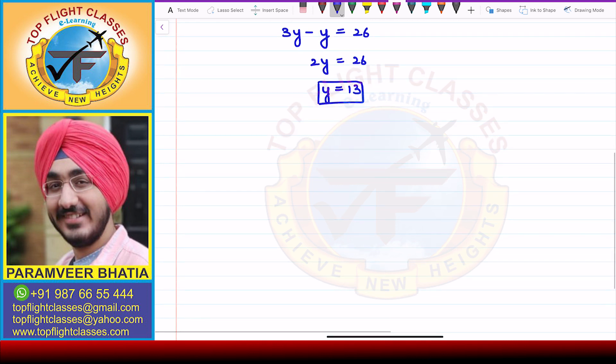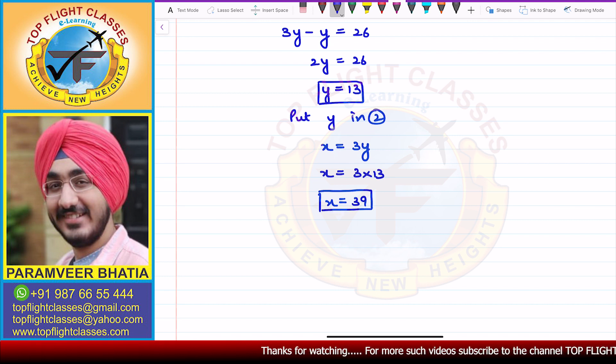Now we put this value in equation 2. Equation 2 is x is equal to 3y, so here we put the value: x is equal to 3 into 13, so x comes out to be 39. So these are the values for x and y. So the two numbers that are part of the solution are 39 and 13.